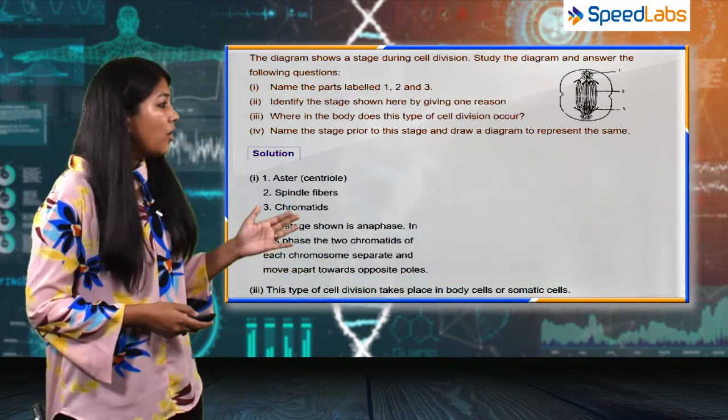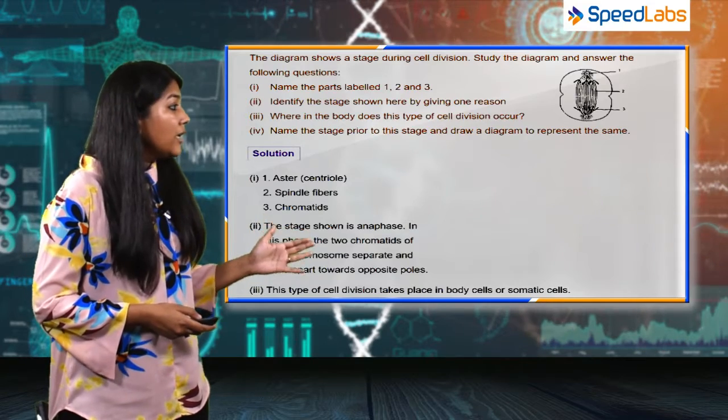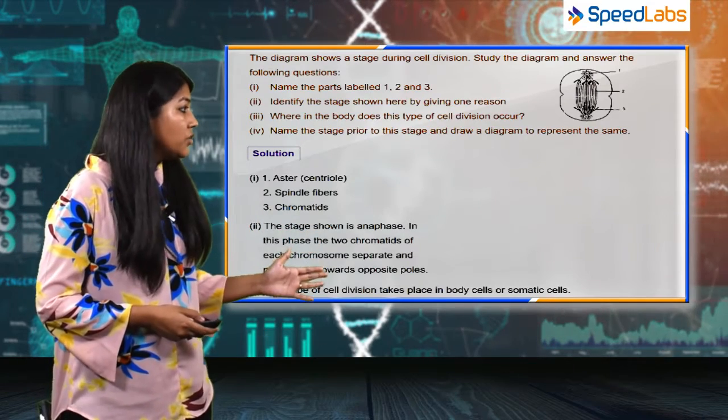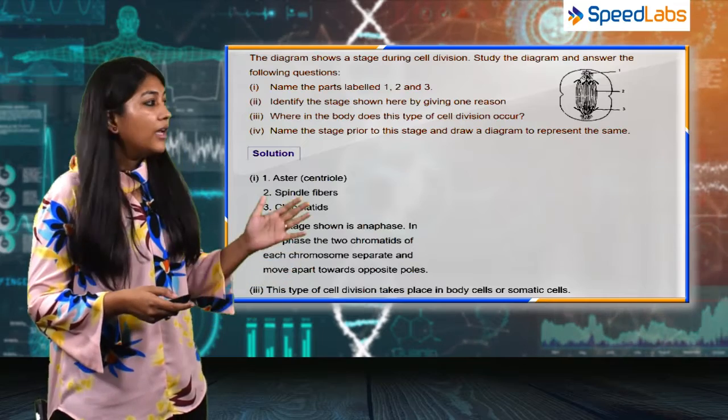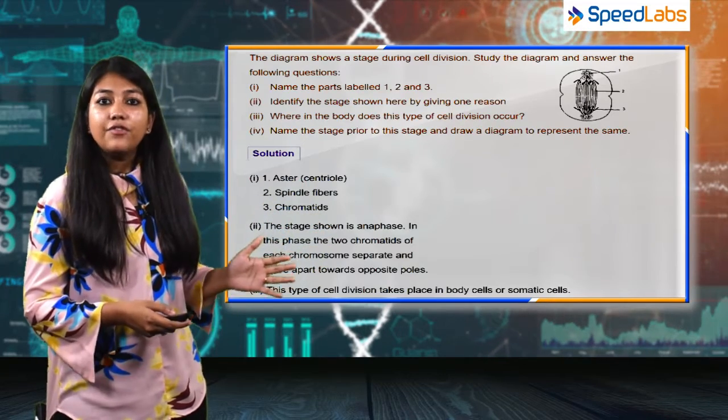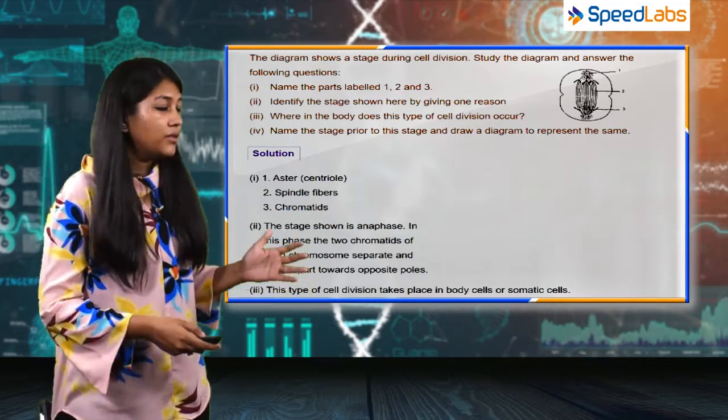Moving on to the next part - name the stage prior to cell division and draw a diagram to represent the same. If this stage is anaphase, the stage before anaphase is metaphase.